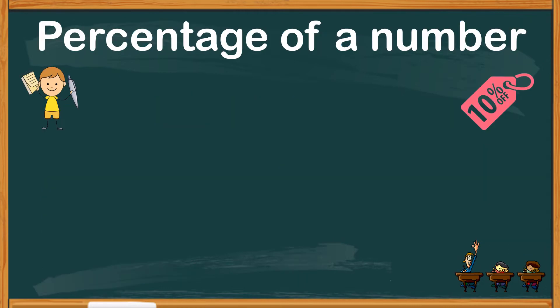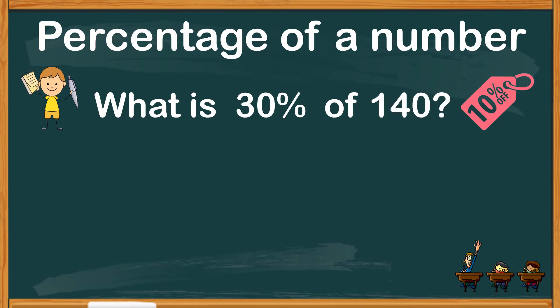Let's begin with a very common question. What is 30% of 140? There are two ways you can find the percentage of a number. You can either change the percent into a fraction or into a decimal. If you're doing it manually, changing percent into a fraction is the easiest method.